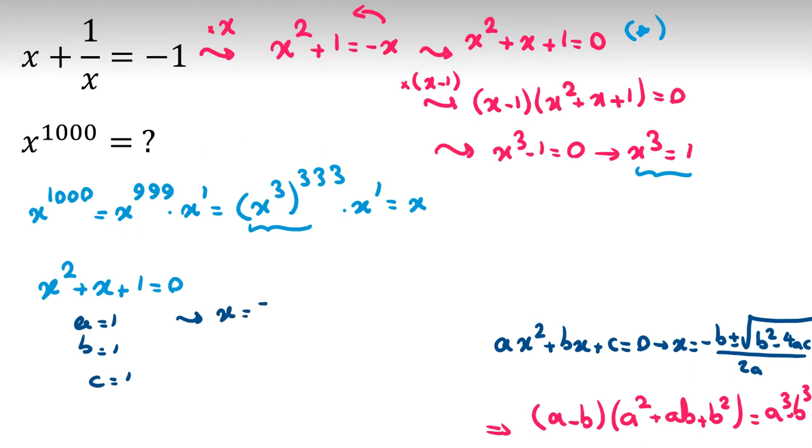So x equal to negative b plus minus b squared, 1 squared minus 4 times 1 times 1, all over 2 times 1, which will be negative 1 plus minus square root of negative 3, all over 2.